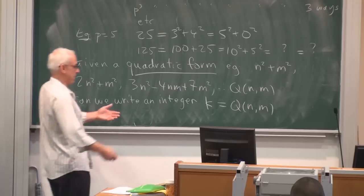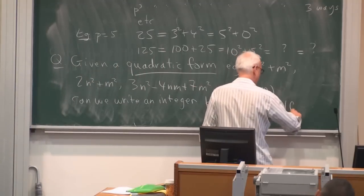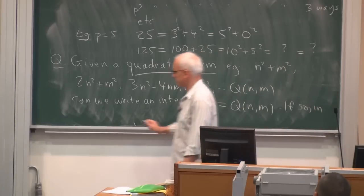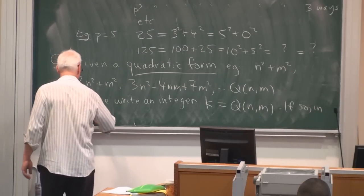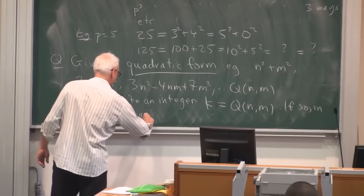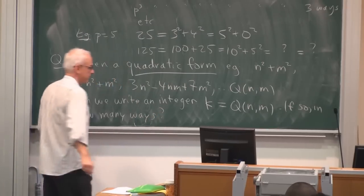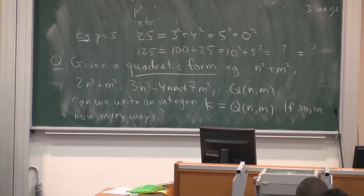So can we write an integer k, let's say, in terms of other integers, n and m, in this form? So let's say the quadratic form is in general q of nm. So the question is, can we write a general integer k as q of nm? And if so, so that might be yes or no, but if so, in how many ways?